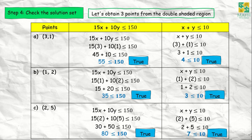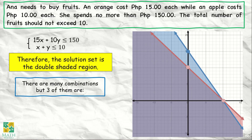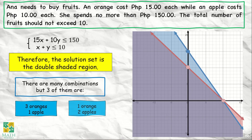Based on our solution, the points obtained from the double-shaded region all result in true. This means the solution set is the double-shaded region. There are many combinations, but three of them are: 3 oranges and 1 apple, 1 orange and 2 apples, and 2 oranges and 5 apples. These are just some of the combinations.